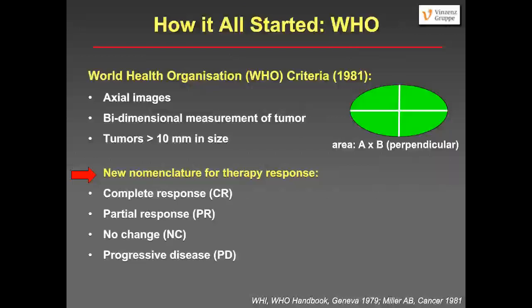How did it all start with the assessment of tumor response? The World Health Organization presented a new concept in 1981, saying you should use CT and look at the axial images. You should measure a tumor, which qualifies if it's more than 10 millimeters in size. You should take a bi-dimensional measurement of the tumor.